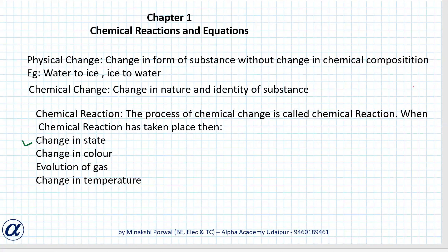There can be a change in state, change in color, evolution of some gas, and change in temperature. All four can occur, or some of them can occur. With a chemical reaction, at least one of them will definitely occur.